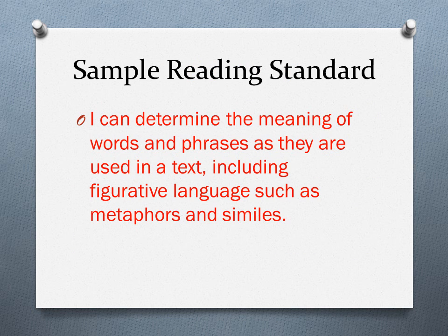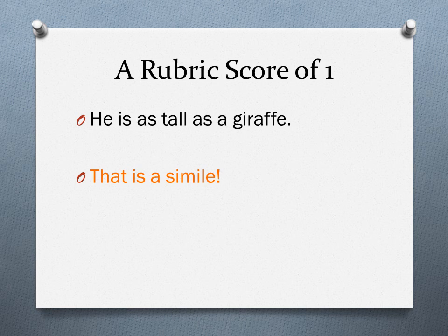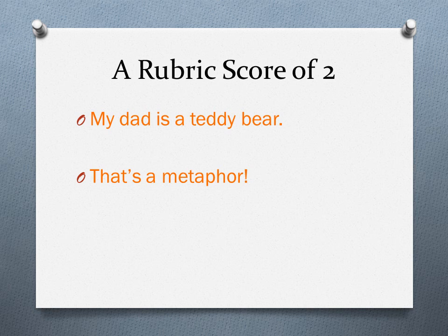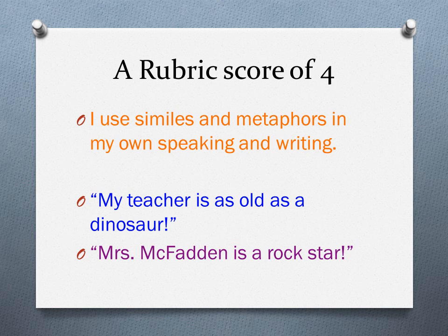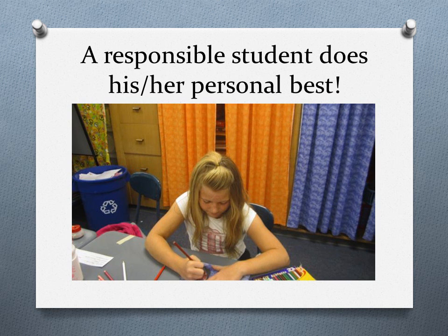Here is a sample of a 5th grade rubric for one standard. Let's say the standard is: determine the meaning of words and phrases as they are used in a text, including figurative language such as metaphors and similes. At a rubric score of 1, I can find a simile in a story. At a rubric score of 2, I can find a simile and a metaphor in a story. At a rubric score of 3, I can determine the meaning of words and phrases as they are used in a story, including both similes and metaphors. At a rubric score of 4, I can apply similes and metaphors in my speaking and writing.